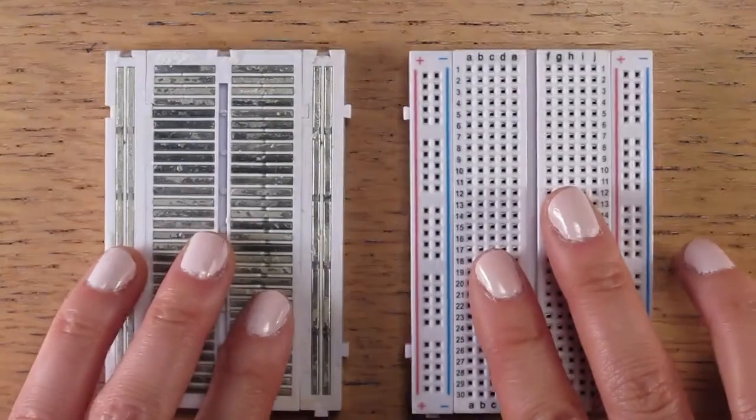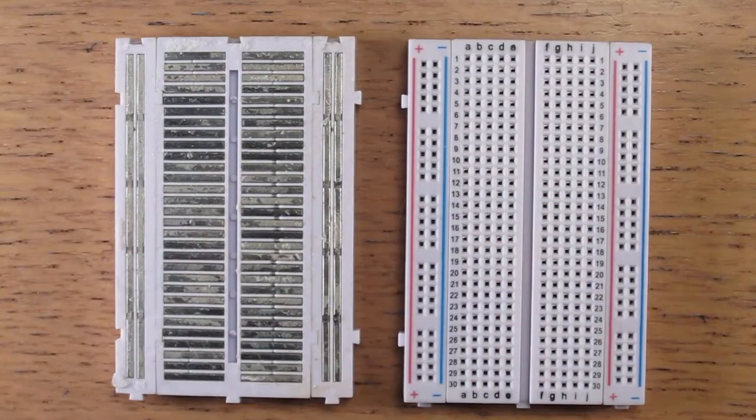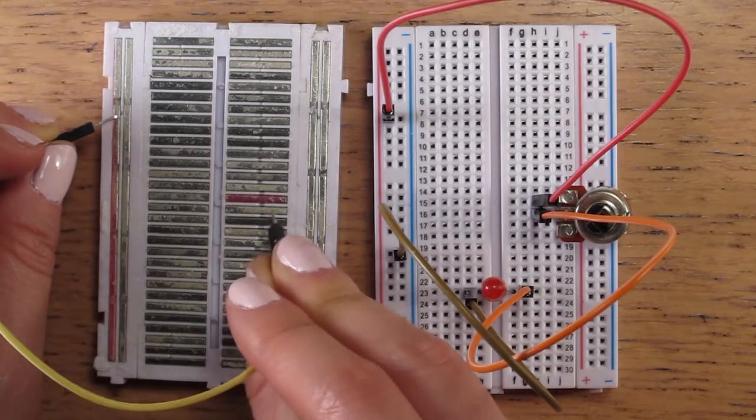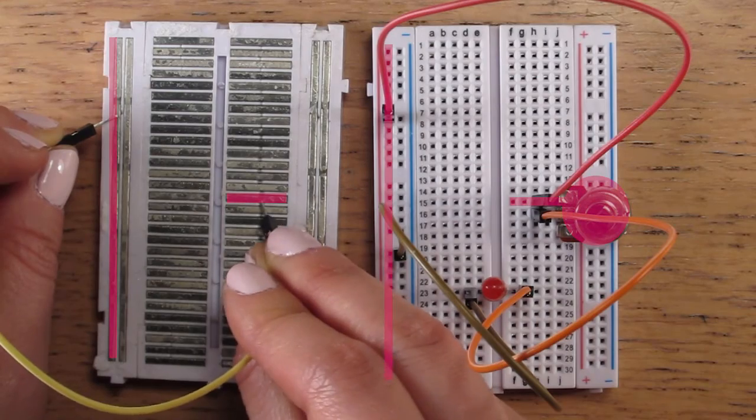Breadboards are actually just a bunch of metal bars, and the holes in the breadboard hold your wires so they touch these bars. Since metal conducts electricity, this basically extends the reach of your wire and gives it a bunch more connections you can plug more things into.